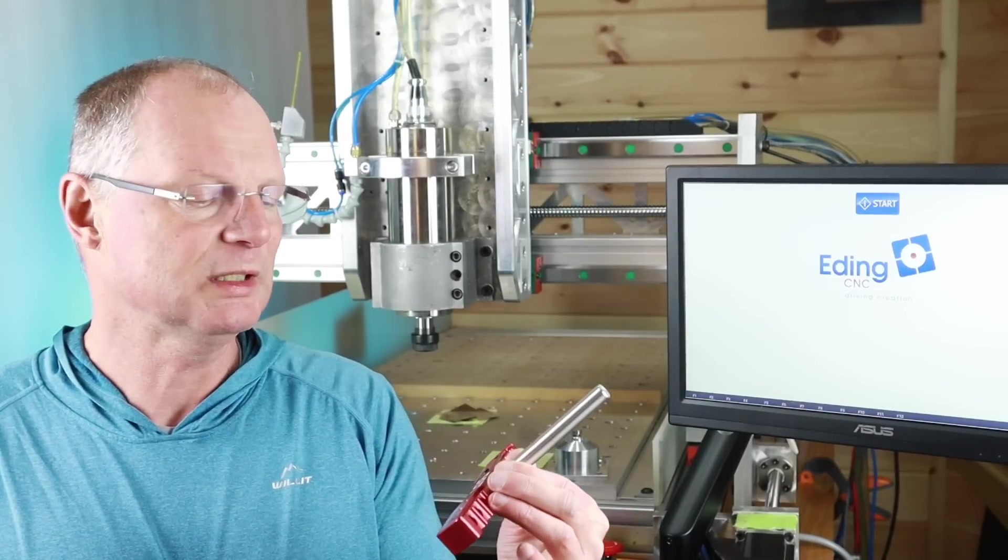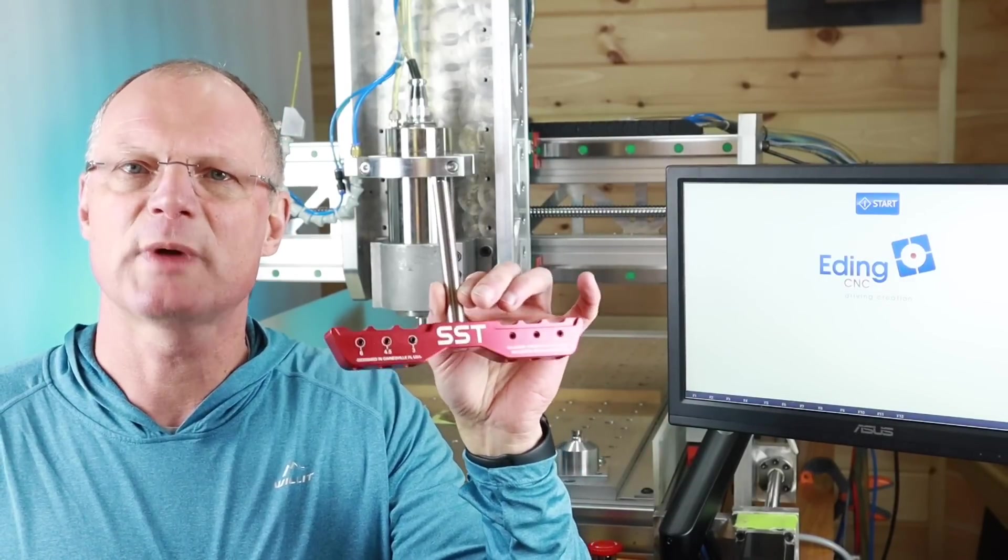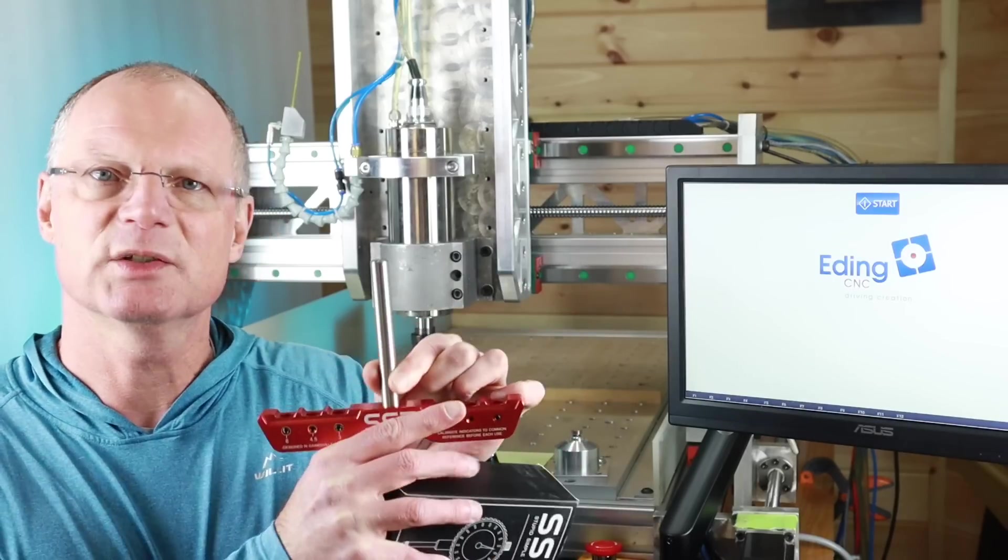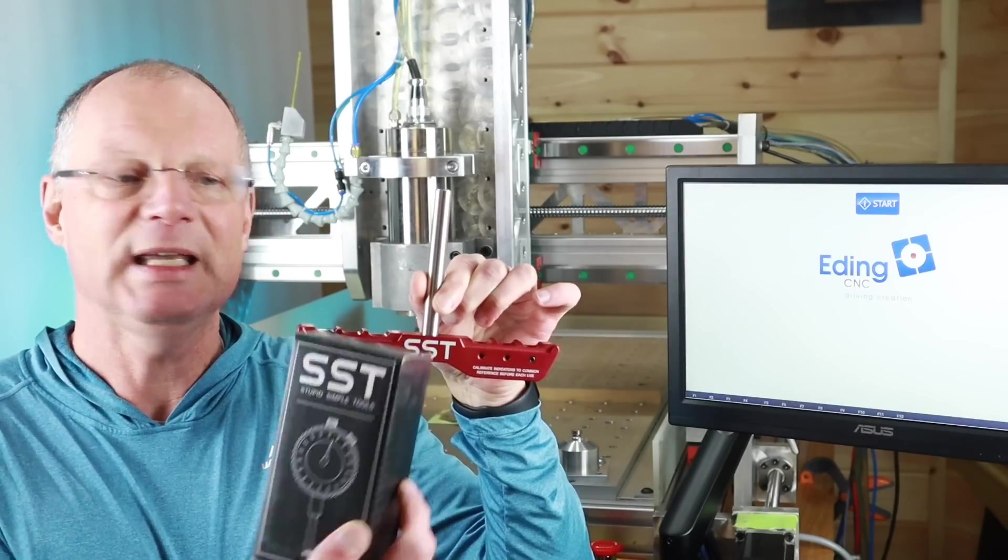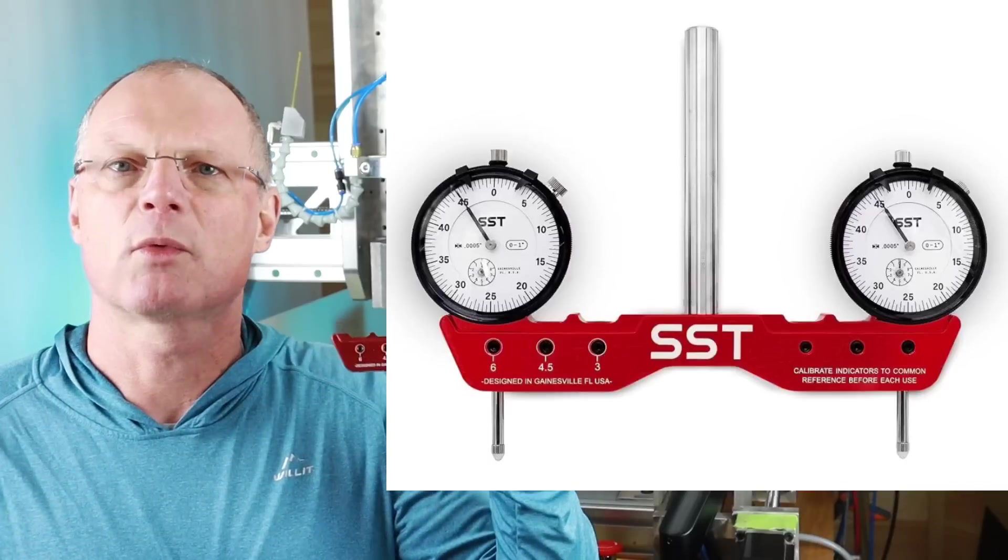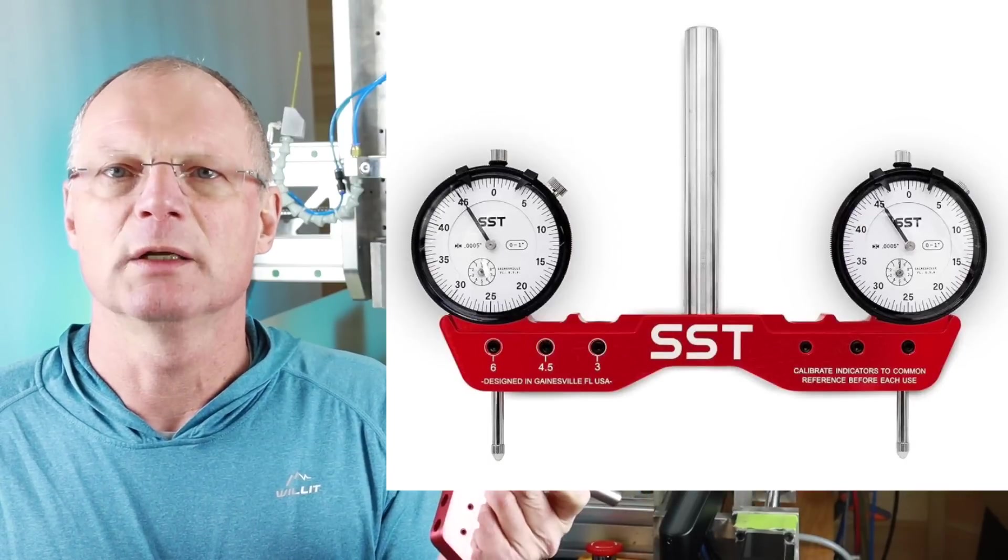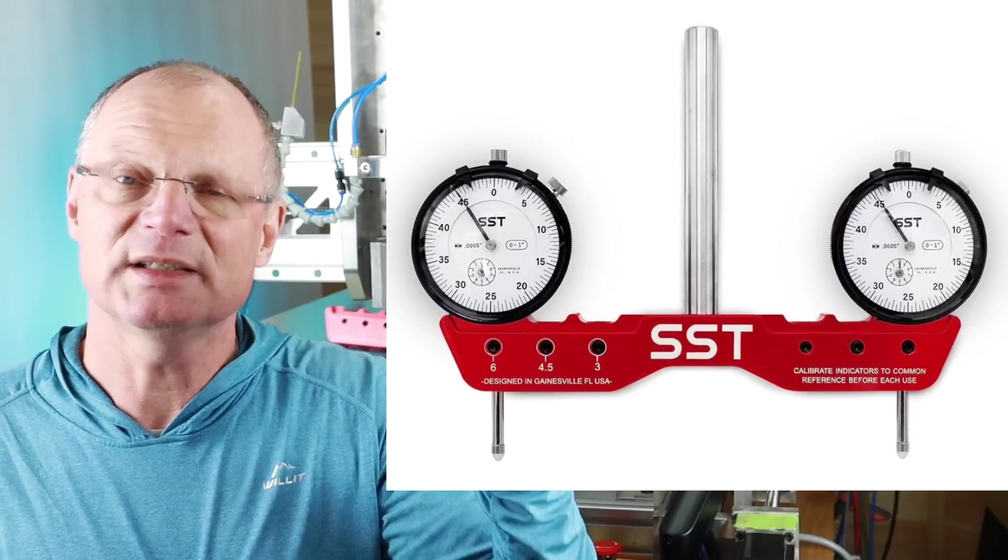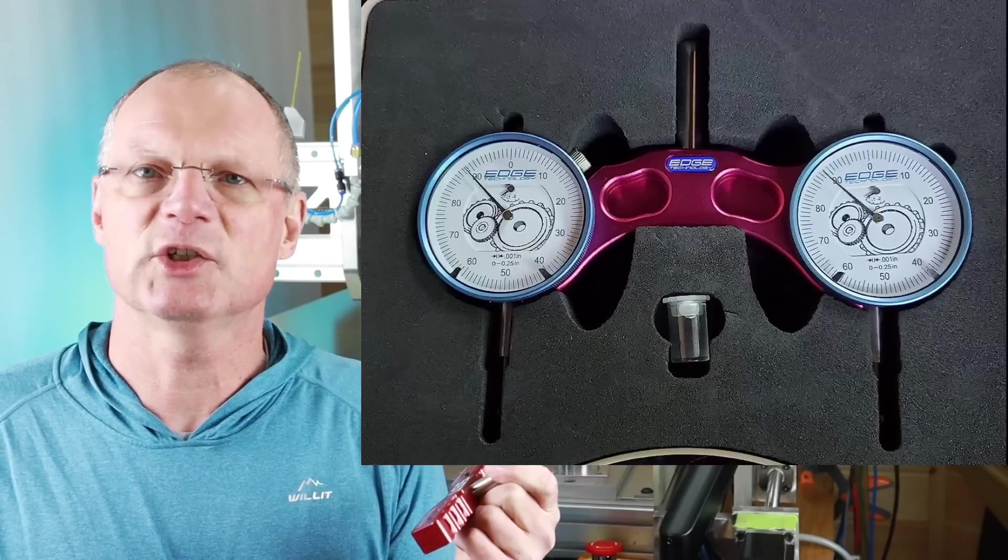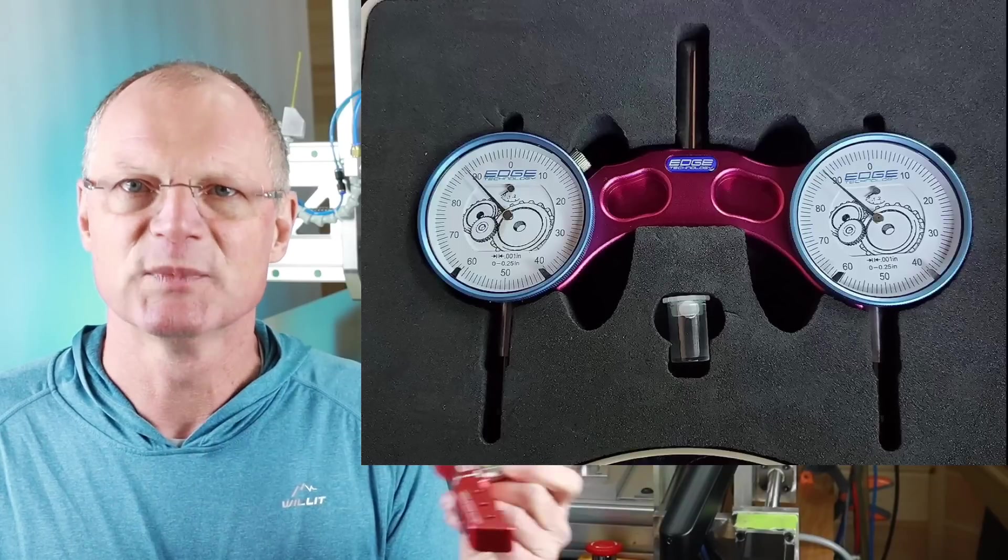One of the tools that I see quite frequently that people use for tramming, for spindle tramming, is this SST tramming tool. This gets inserted into the spindle and then it comes also with two dial indicators, one on the left and one on the right. This is about a hundred dollars. There's a second one I think it's made by Edge Technologies that's very similar. Both of these are good, but let me show you an alternative.